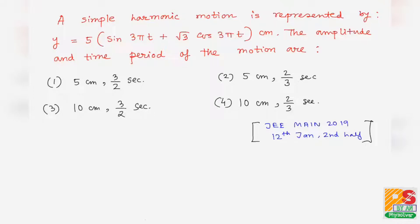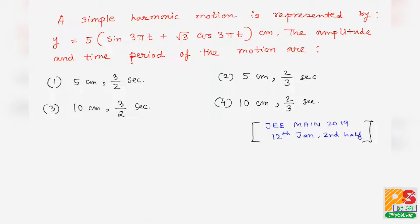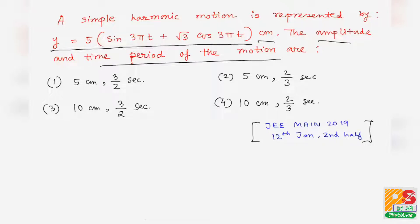Hello students. The question is: a simple harmonic motion is represented by y = 5·sin(3πt) + √3·cos(3πt) centimeter. The amplitude and time period of the motion are — the options are given. This question is taken from JEE Mains 2019, 12 January second half. This is a very straightforward and typical question from the chapter on oscillations.